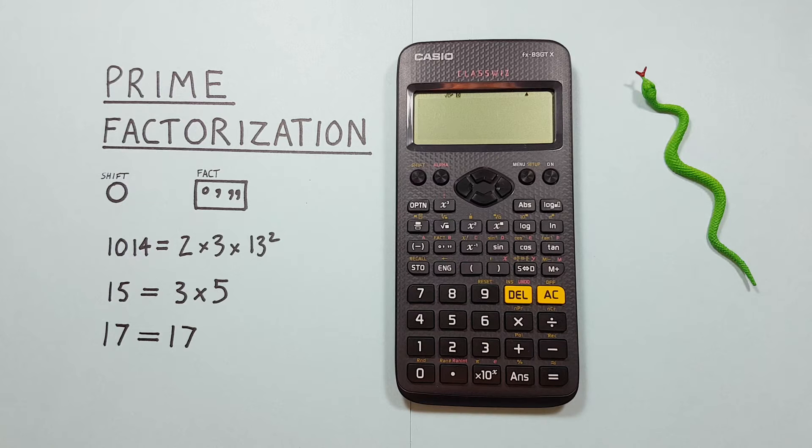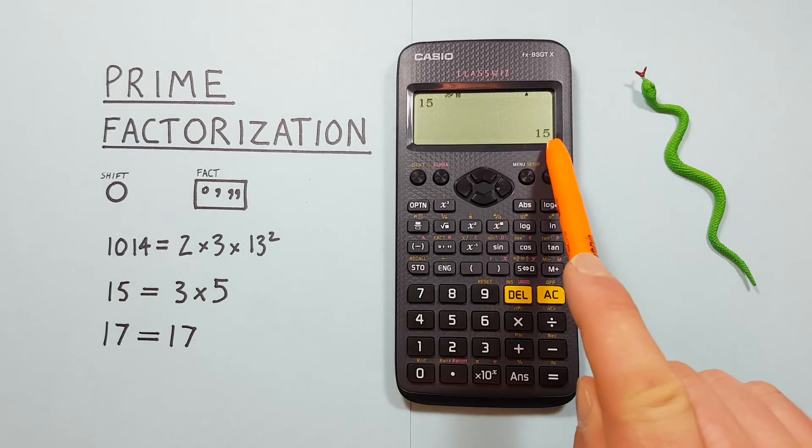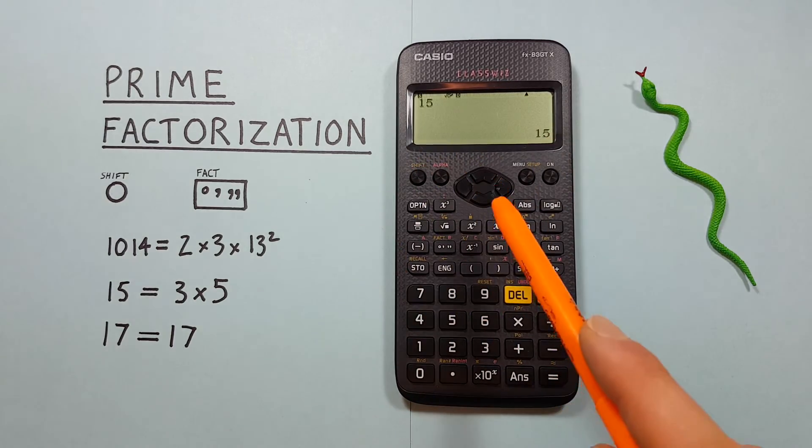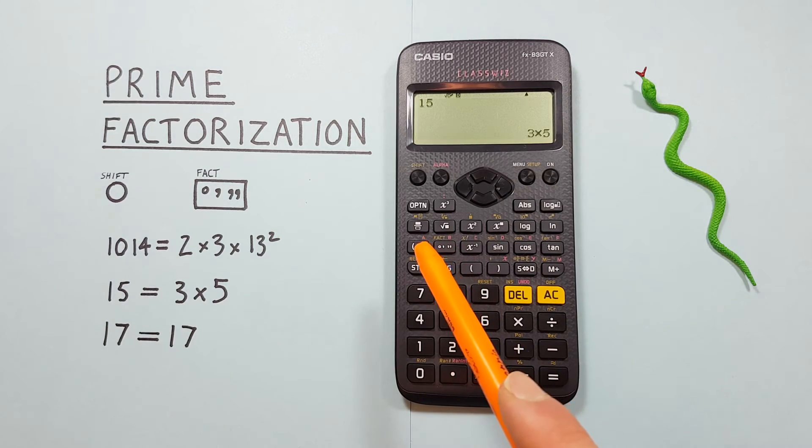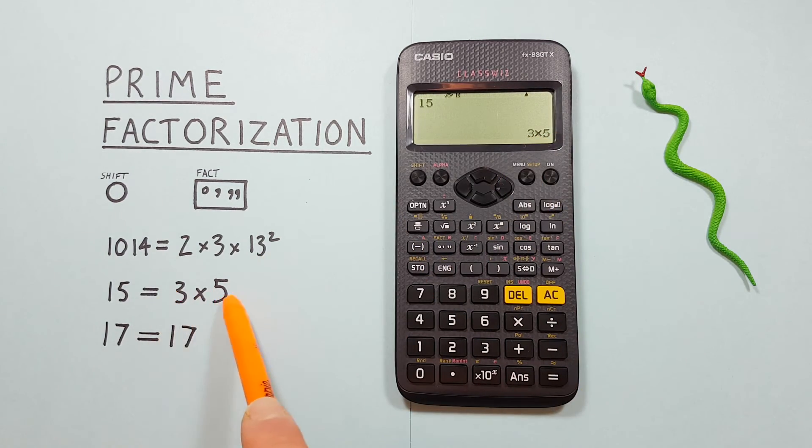Let's try a simpler example. Let's find the prime factors of 15. Again we place it on our screen, press equals so that it's down here, and then press the shift degree minute seconds key. We get 3 times 5, which are our prime factors.